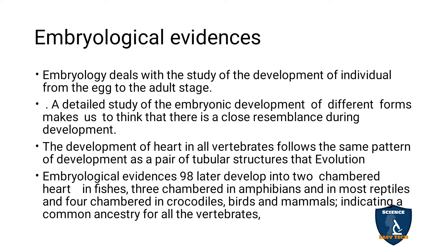The embryonic development of various forms shows a close resemblance during the developmental stages. The development of the heart in all vertebrates follows the same pattern — starting as a pair of tubular structures that later develop into two chambers in fishes, three chambers in amphibians and most reptiles, and four chambers in crocodiles, birds, and mammals — indicating common ancestry for all vertebrates.